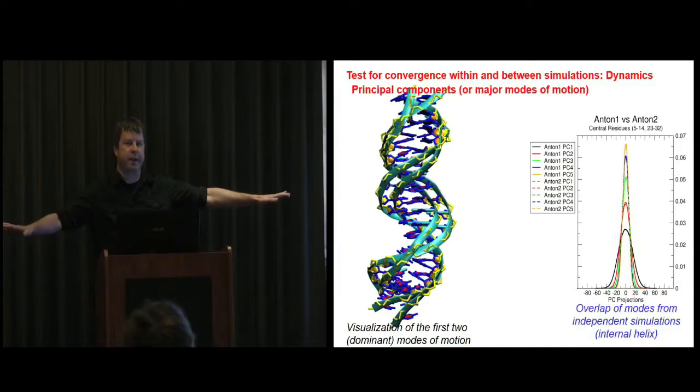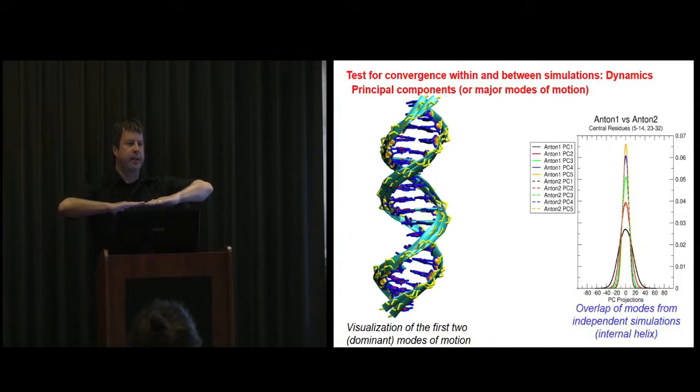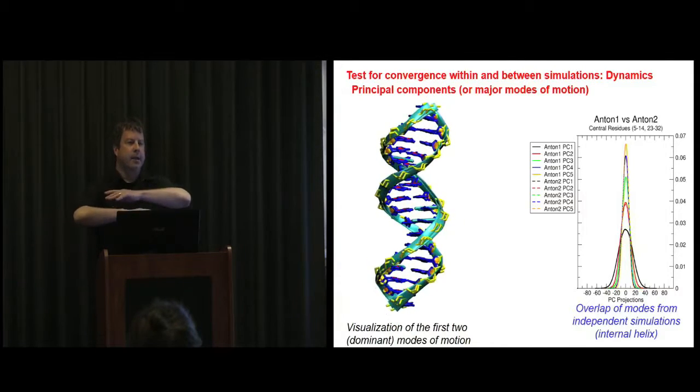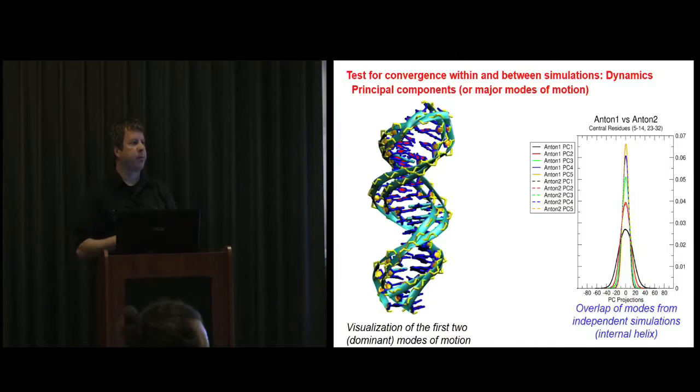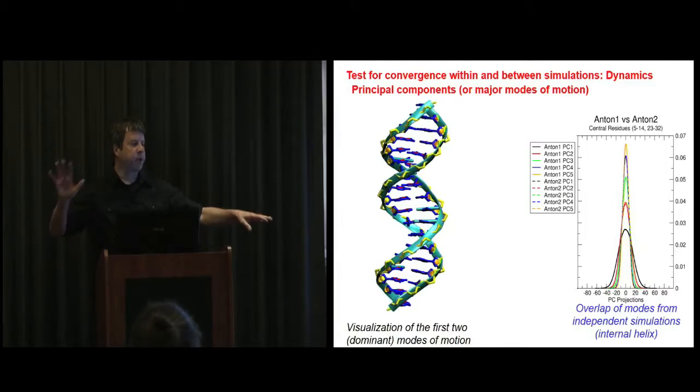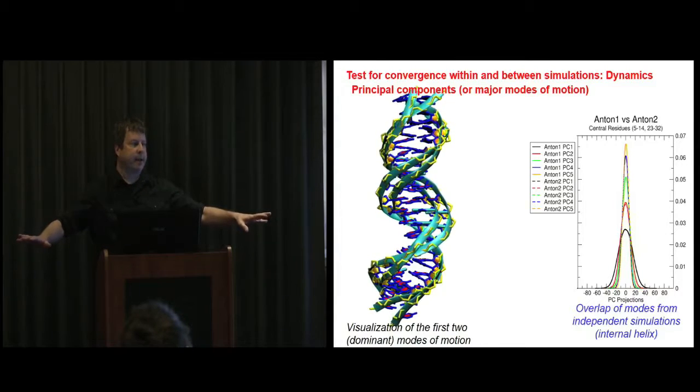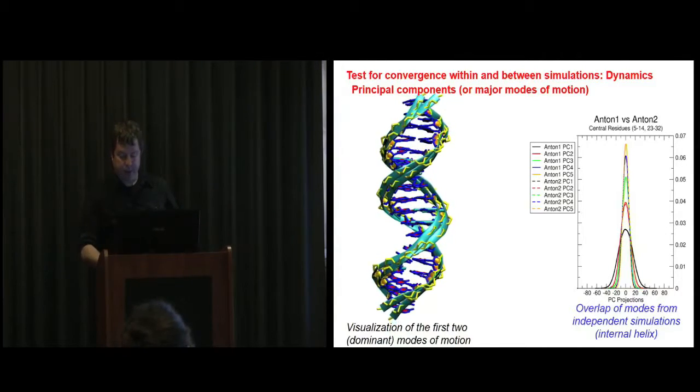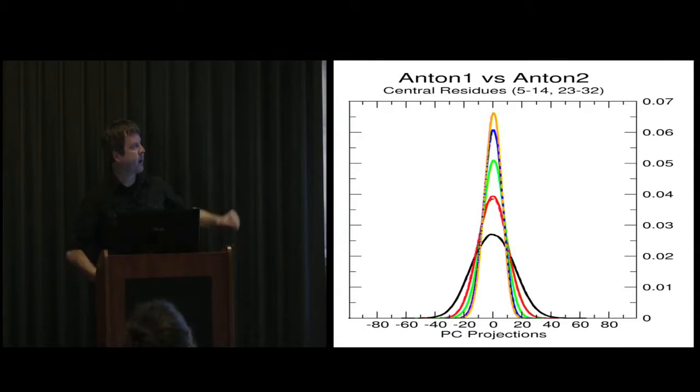We try to prove that independent simulations give the same results. We can run two sets of simulations, aggregate the trajectory data together, calculate the principal components or principal modes of motion of the system. Then we separate the trajectories and project those modes of motion on the two independent data sets. If they overlap, which for the internal eight base pairs, the exact same modes of motion were sampled in those two independent trajectories.